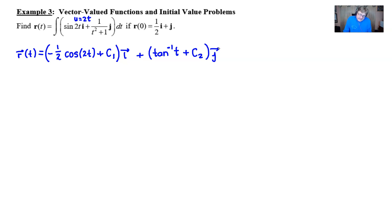Now if this were a problem that just said that initial condition wasn't there, this would be your final answer. So how do we work with that initial condition? Well, if we know that r of 0 is equivalent to 1 half i plus j, well that means also that r of 0 would be equivalent to what we get in this vector if we let the t be 0s there.